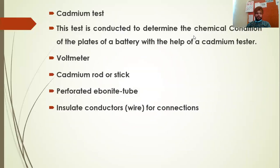The next test is the cadmium test. The cadmium test checks the chemical condition of the plates of the battery. Cadmium is a metal used for this test. The cadmium tester has four main parts: a voltmeter, a cadmium rod or stick, a perforated ebonite tube, and an insulated conductor wire for connection.